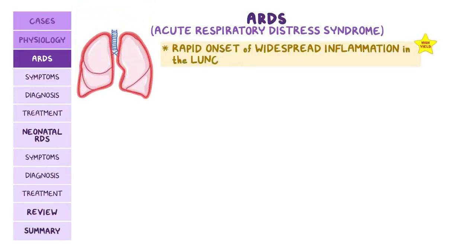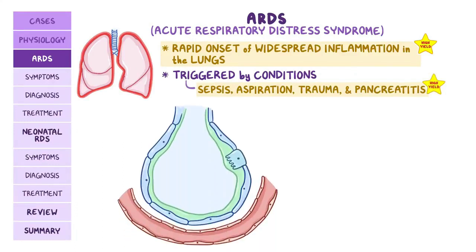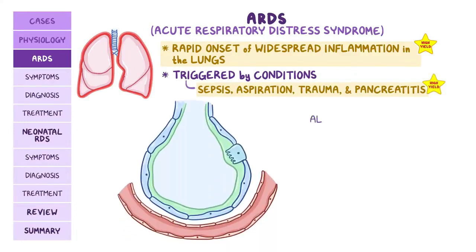Acute respiratory distress syndrome, or ARDS, is characterized by rapid onset of widespread inflammation in the lungs, which can lead to respiratory failure. ARDS is not a primary disease, as it is usually triggered by conditions like sepsis, aspiration, trauma, and pancreatitis.